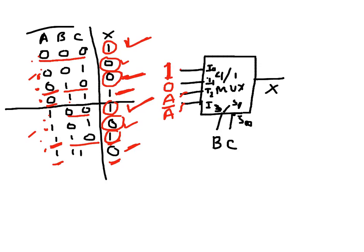Let's verify with an example: say A=0, B=0, C=1. The select input BC is 0-1, so the MUX selects I2. The input at I2 is A, and A is 0, so the output X should be 0 — and that matches the truth table. This confirms how we can implement a three-variable function using a 4-by-1 MUX.